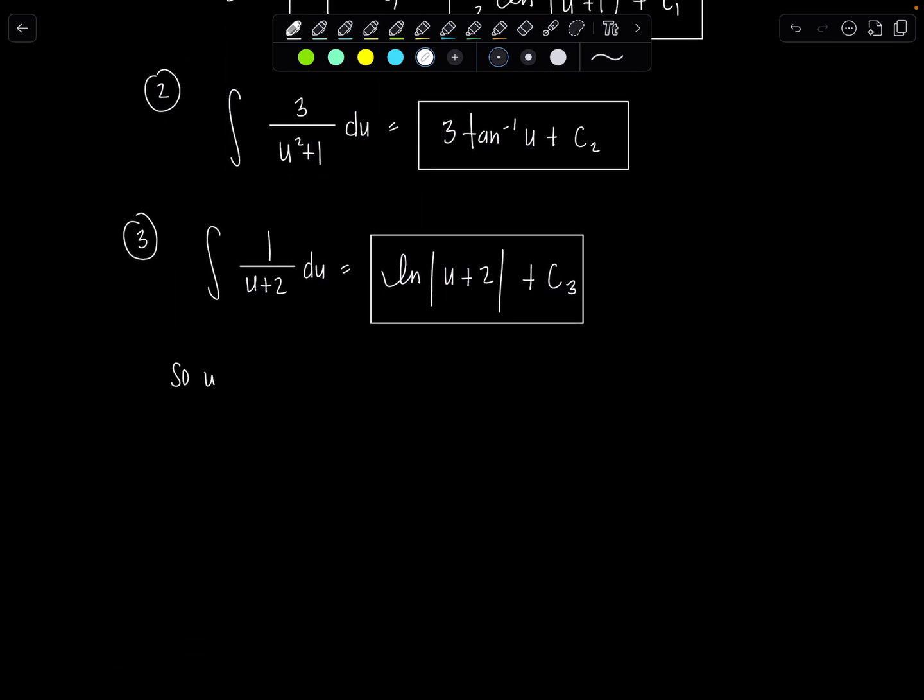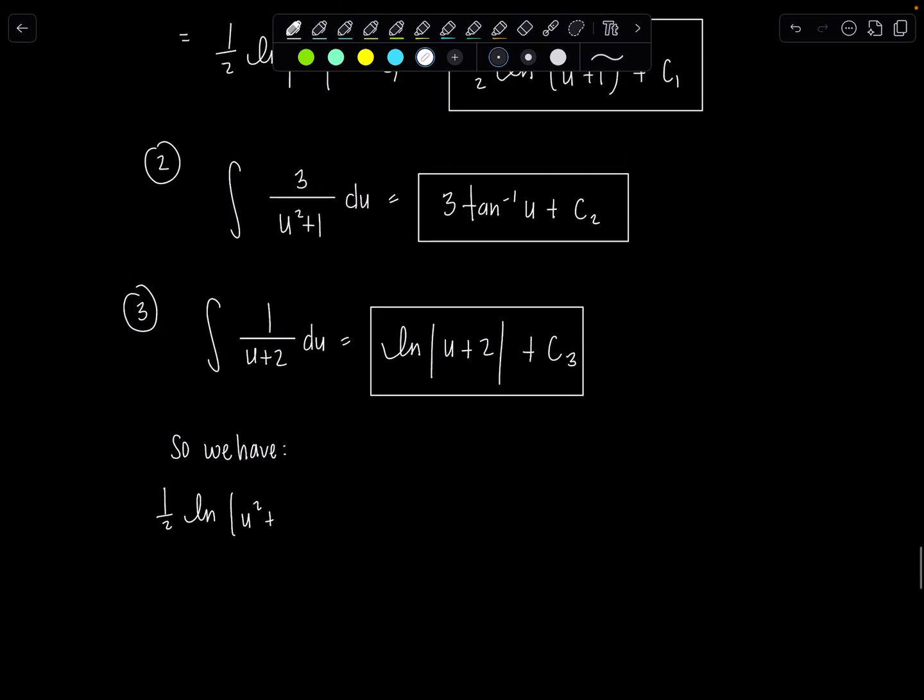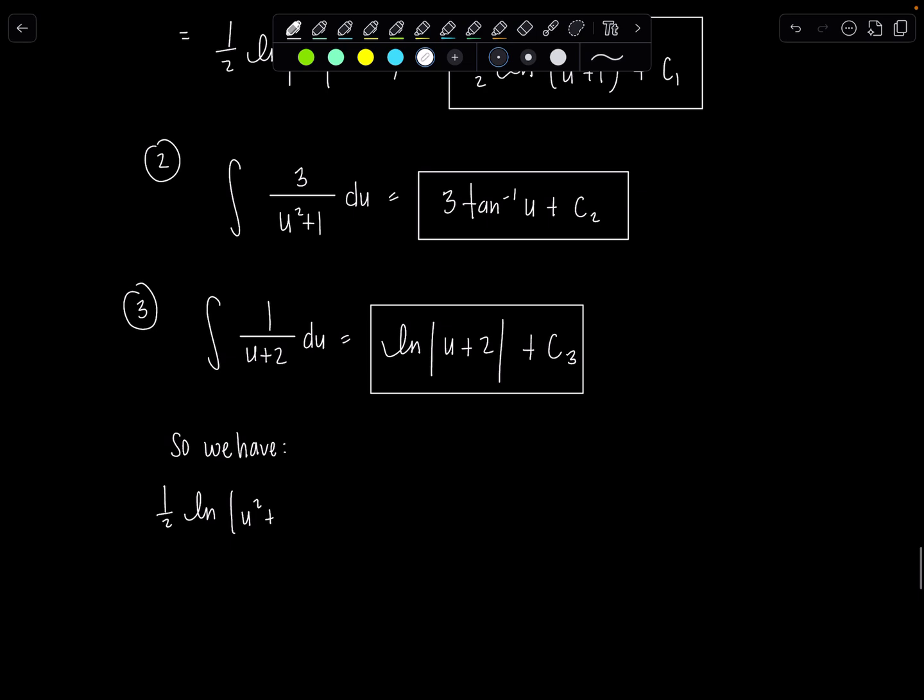So now we have all together one half natural log u squared plus 1 minus 3 tan inverse of u minus natural log absolute value u plus 2 plus c. And then we're going to tell the people c is c1 minus c2 minus c3 because those two integrals had minus signs in front of them.